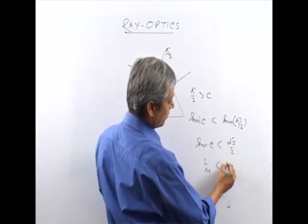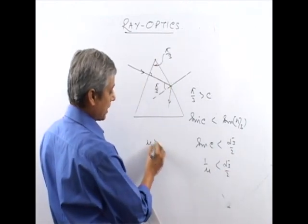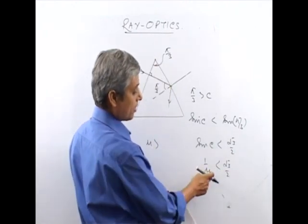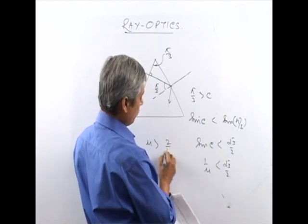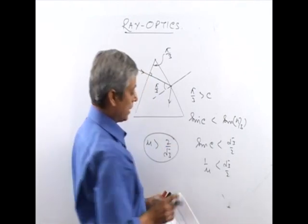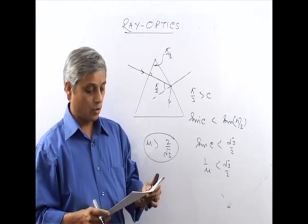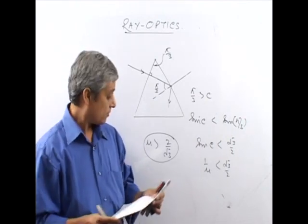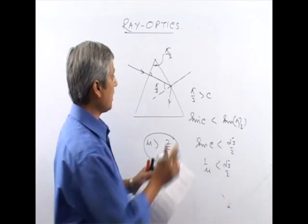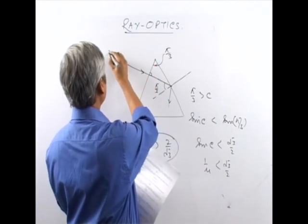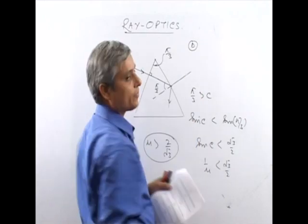Since 1/μ < √3/2, we get μ > 2/√3. When reciprocating an inequality, the sign changes. Therefore μ must be greater than 2/√3. The answer to question 34 is D.